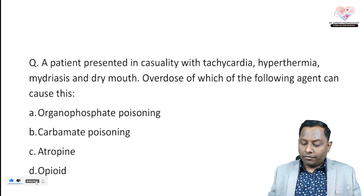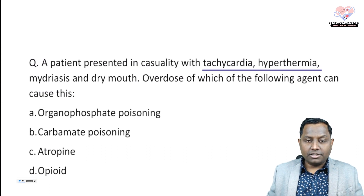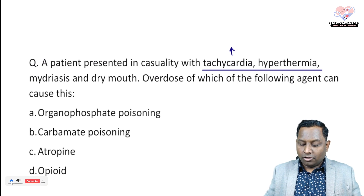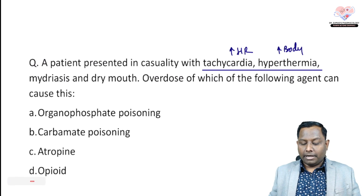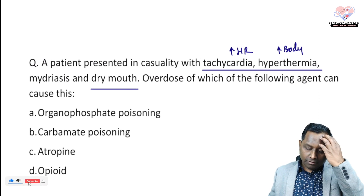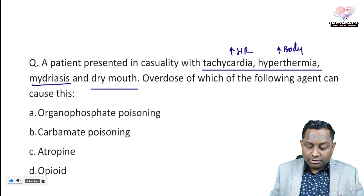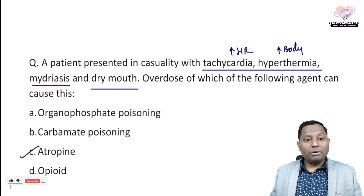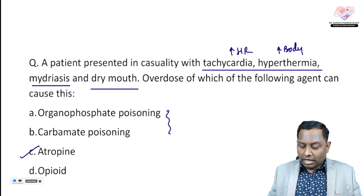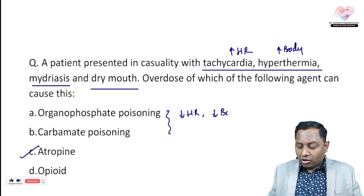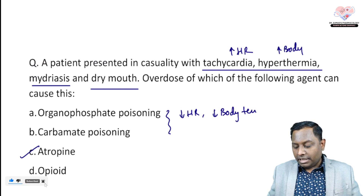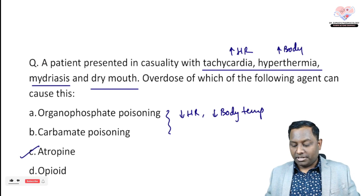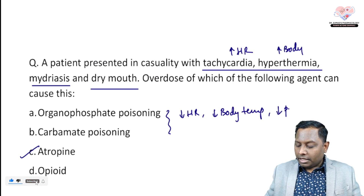Fourth question: a patient presents with tachycardia, hyperthermia, mydriasis, and dryness of mouth — everything is 'on top': heart rate elevated, increased body temperature, increased pupil size, dry mouth. This points to atropine poisoning. In organophosphate or carbamate poisoning, heart rate is lower, body temperature may be normal or decreased due to excessive secretions, and pupil size is decreased.